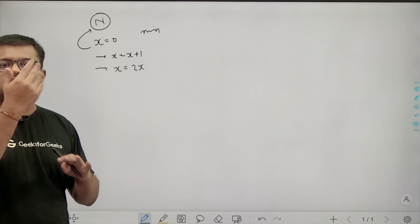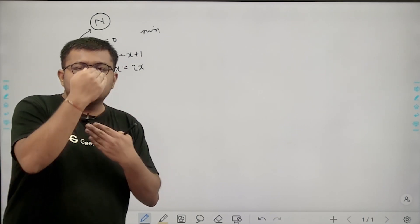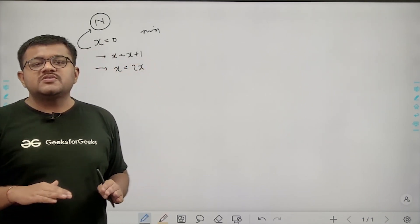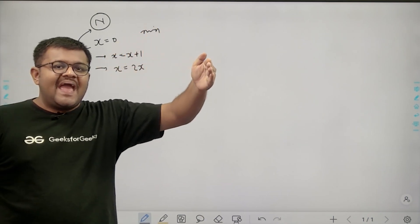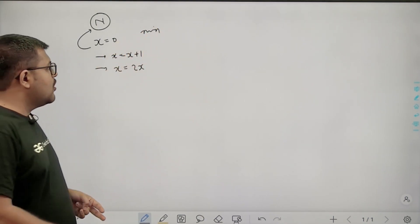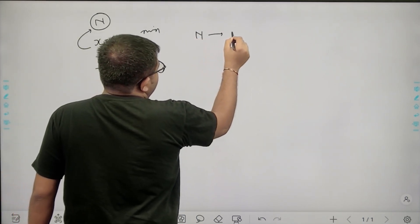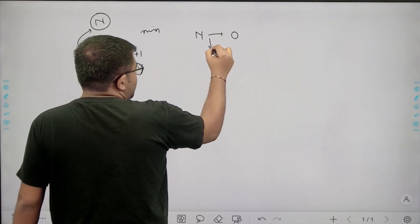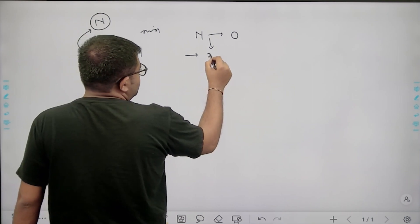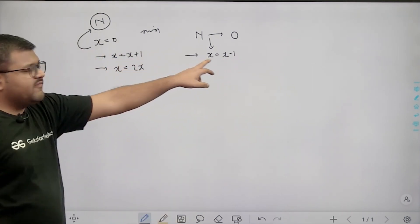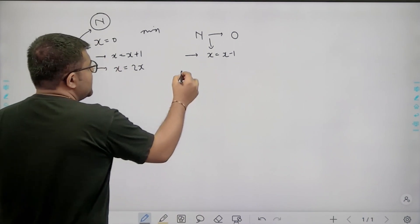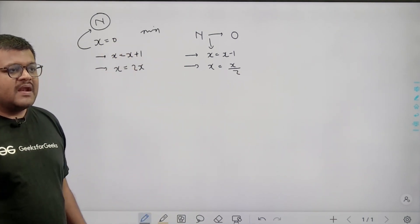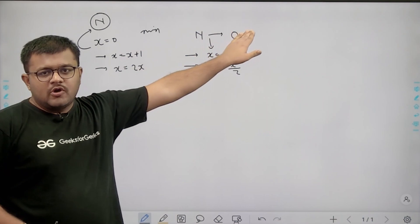Starting from 0 and reaching N is a bit confusing. Instead, we can think of it in reverse: make N equal to 0 using the reverse of the two operations. The first reverse operation would be subtract 1 (instead of adding), and the other is divide x by 2 (instead of doubling).